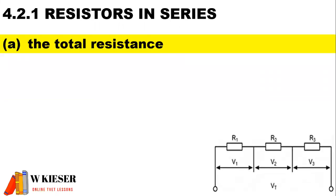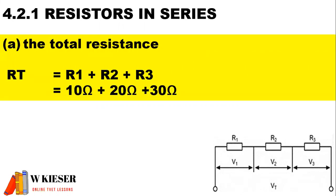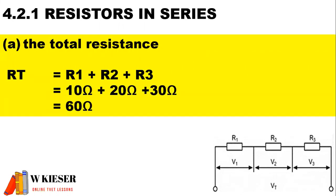Looking at our circuit diagram, we have three resistors connected in series with a volt drop across each resistor. To calculate the total resistance, that will be R1 plus R2 plus R3, and we end up with a total resistance of 60 ohms.